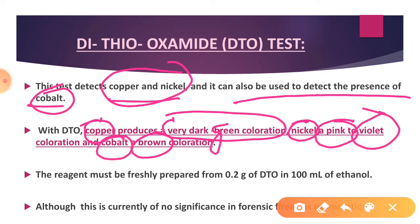Cobalt color ke variations aapko wahanpa dekhanay ko milenge — jo bhi aapka element wahanpa present hoga to wohi wala color aapko show karayega. Usse aapko pata chalega ki is particular GSR mein ye cheezein present hain.